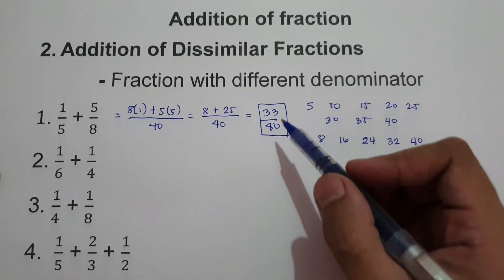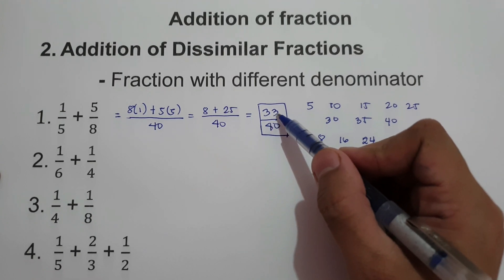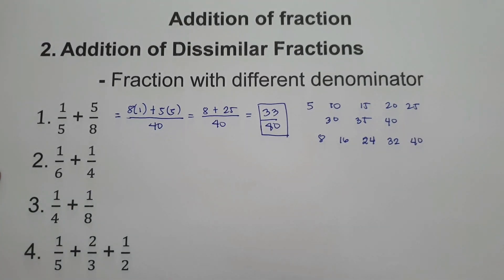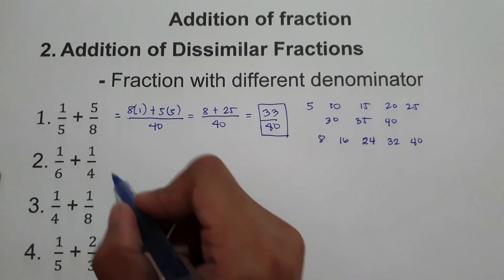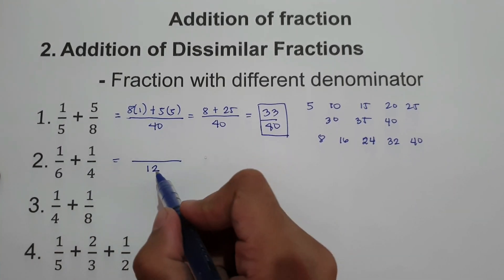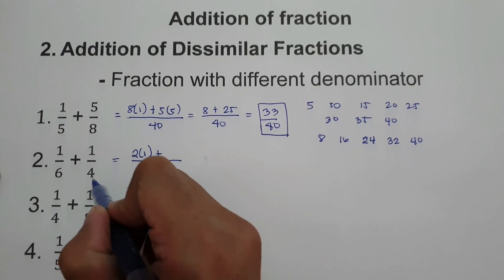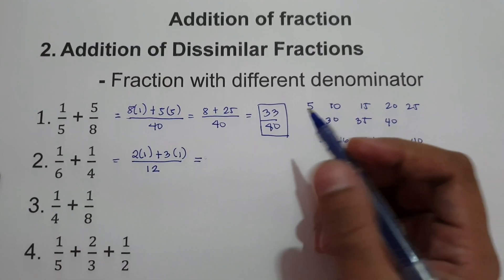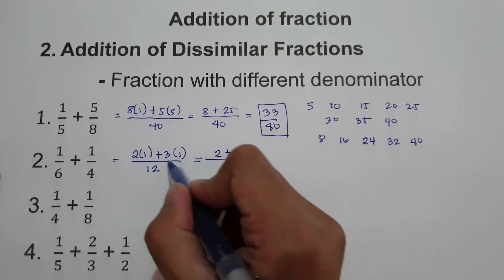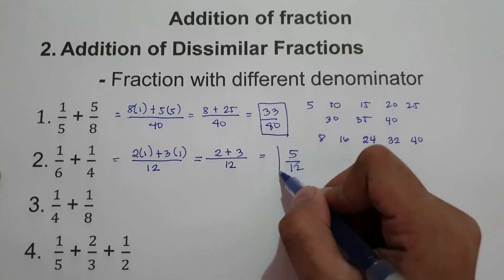Whenever we have a fraction, it must always be written in simplest form. In this case, we can't simplify 33 over 40, so we write 33 over 40 as our answer. Number 2: let's have 1 over 6 plus 1 fourth. The least common multiple of 6 and 4 is 12. 12 divided by 6 is 2, multiplied by 1; plus 12 divided by 4 is 3, times 1. Writing denominator 12: 2 multiplied by 1 is 2, plus 3 multiplied by 1 is 3. We're going to have 5 over 12 as our answer.